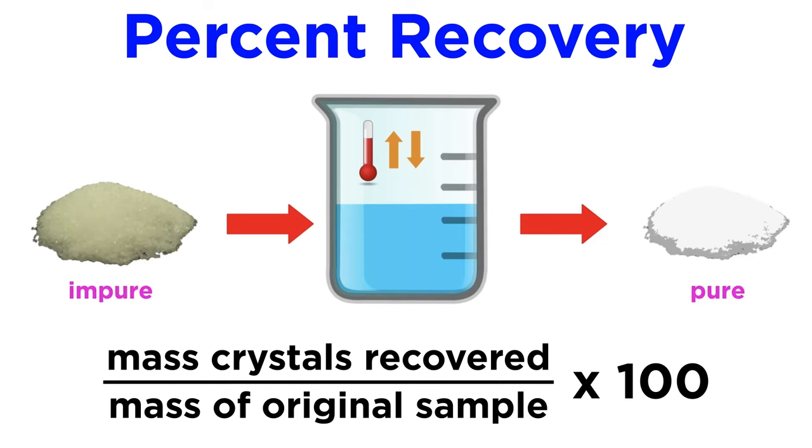We can also check the percent recovery of our sample by weighing the purified sample. Whatever the mass of the crystals recovered, we can divide this by the mass of the original sample and multiply by 100 to get the percent recovery. During recrystallization we always lose a percentage of our sample, so expect for this value to be less than 100%. This is due to the impurities which have been removed from the lattice, as well as some of the pure product which is lost in the process.